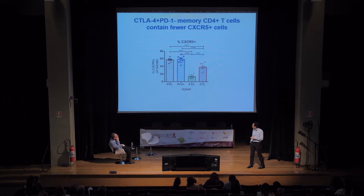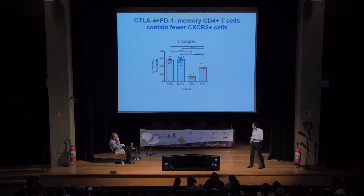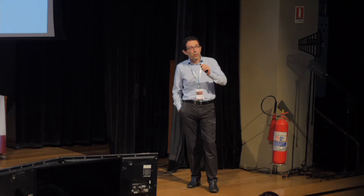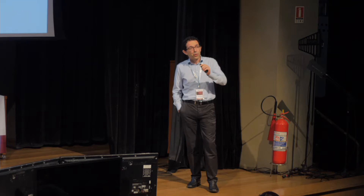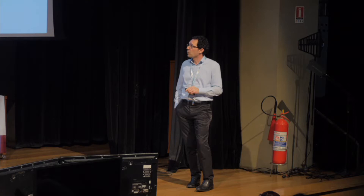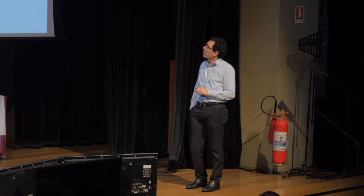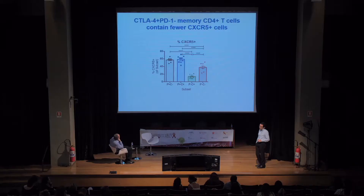An interesting result from the phenotypic analysis is that CTLA-4+PD-1− cells have very low CXCR5 expression. Since CXCR5 is an important receptor for homing to lymph node follicles, this suggests that these Treg-like cells have a much lower chance of localizing in the follicle compared to the other subsets. Given that data show the majority of replication-competent virus resides in the follicle, we were interested to investigate this further.